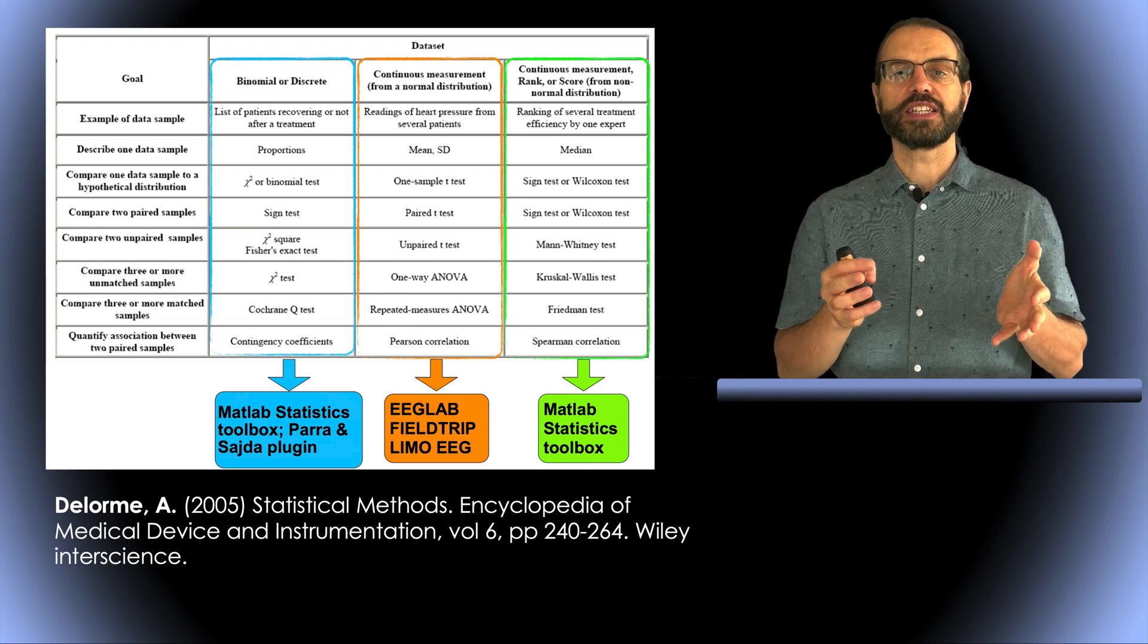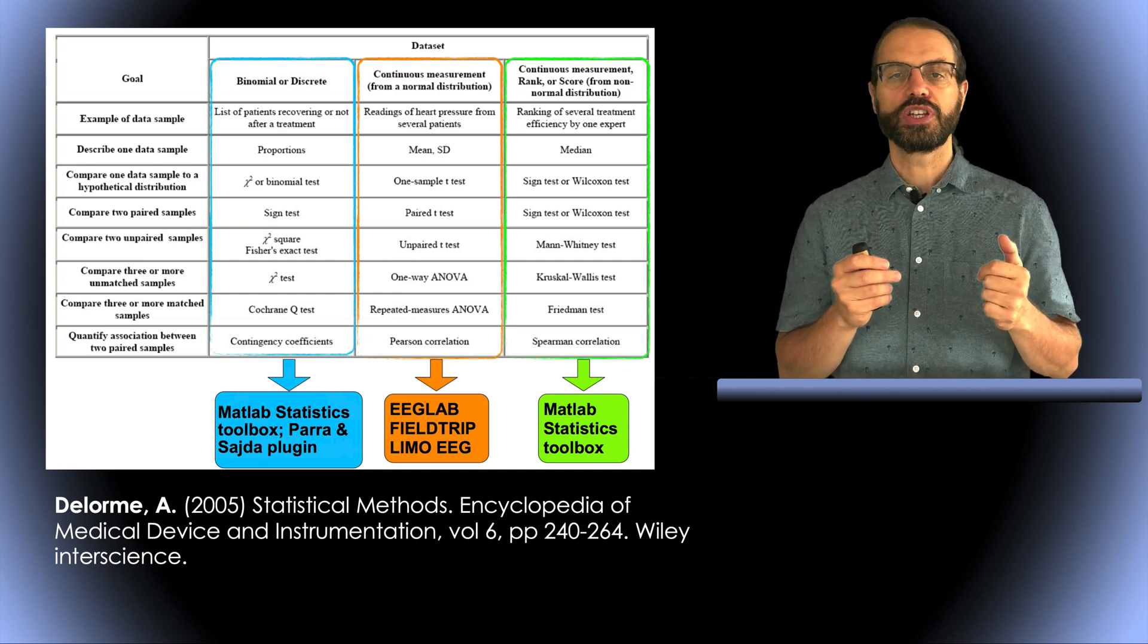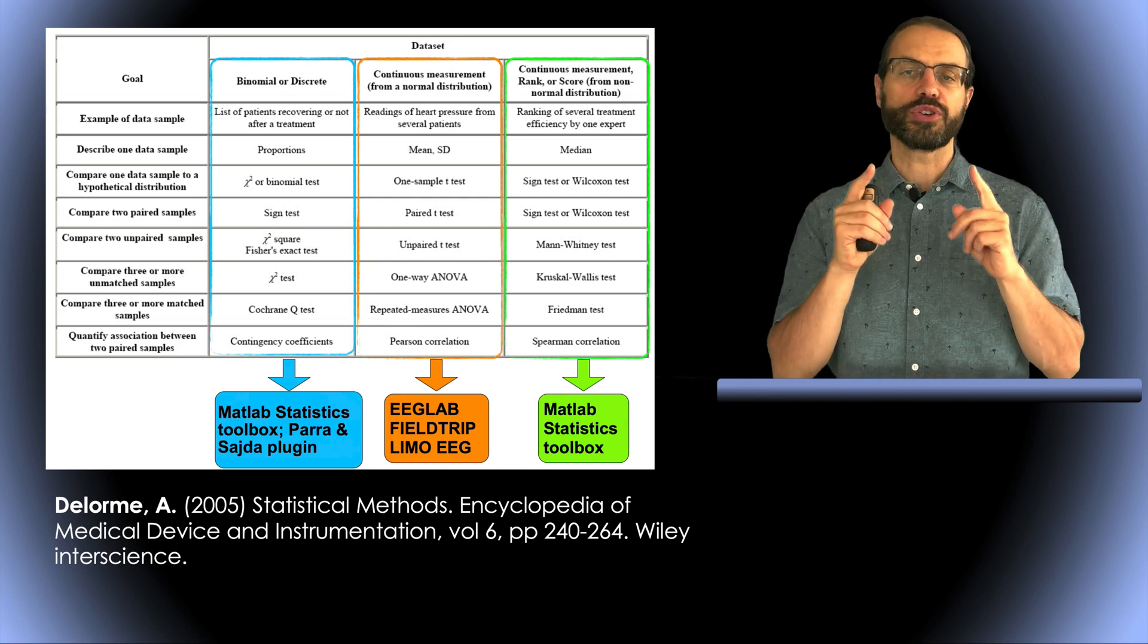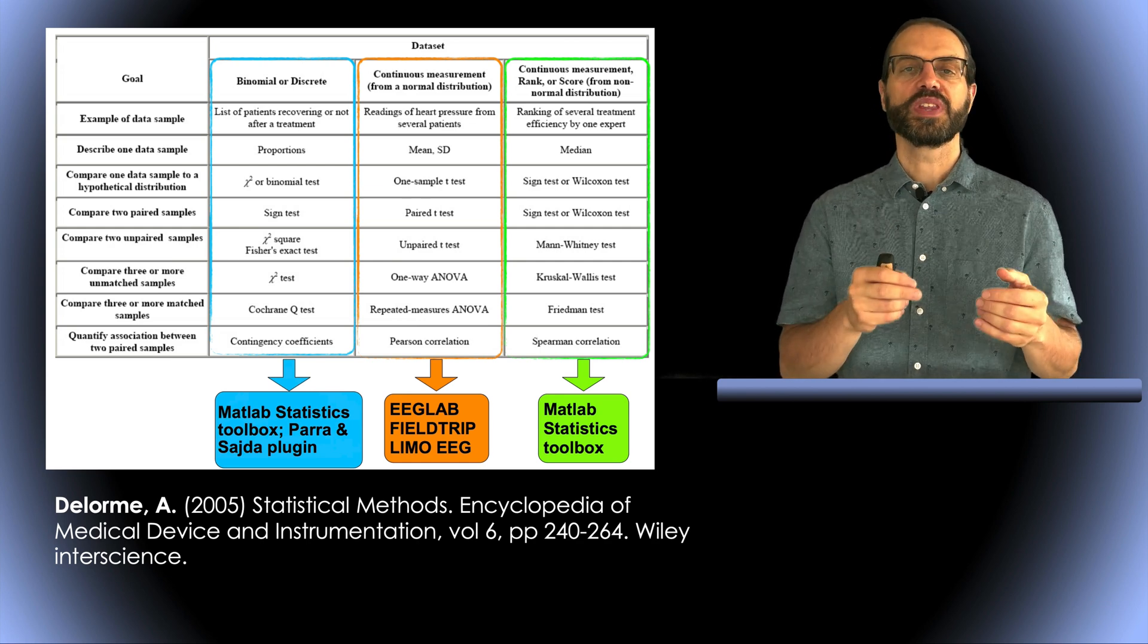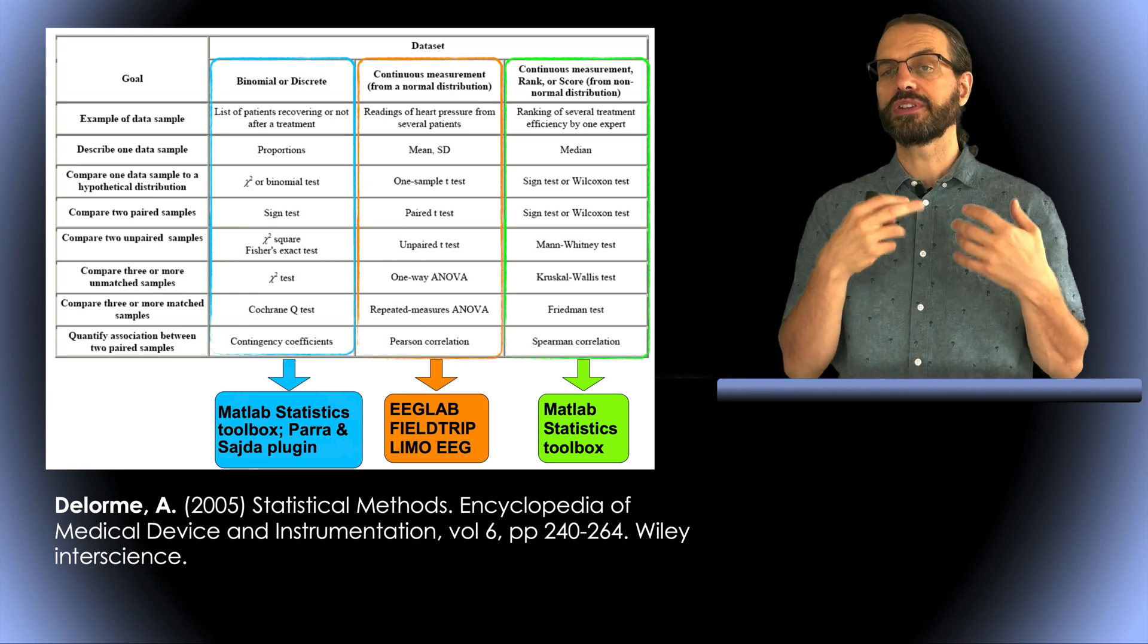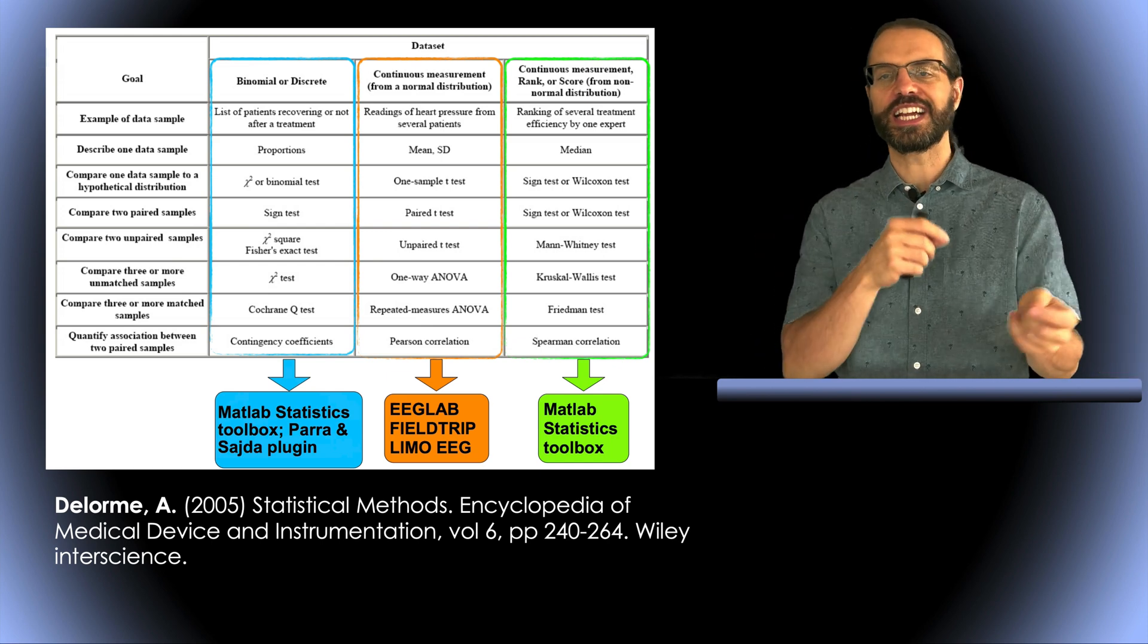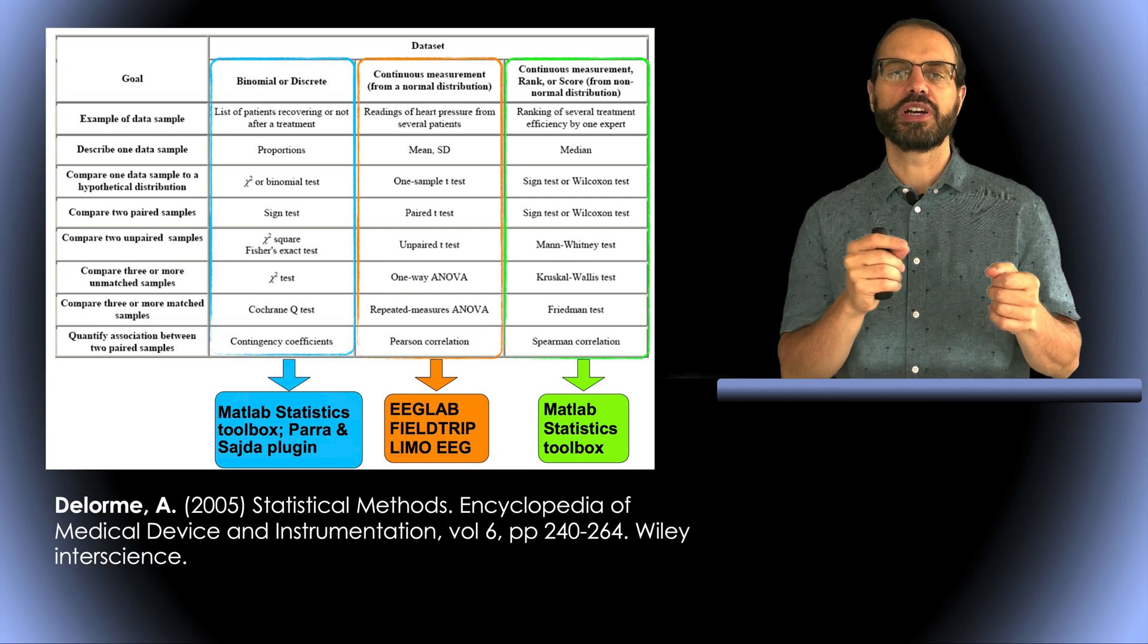There are other types of statistics based on the type of data and hypothesis you may have. These are statistics to compare discrete values, for example, when you count the number of participants on which you observe an effect, or when you consider yes-no answers to questionnaires. There are statistics for continuous data, which are typically the ones we use for EEG. There are also statistics for ranked data. These are usually used to compare ordered data, but can also be used on continuous values, such as reaction time or even EEG. For each type of data, you have different recipes if you want to compare groups of participants, conditions, or perform regression analysis.